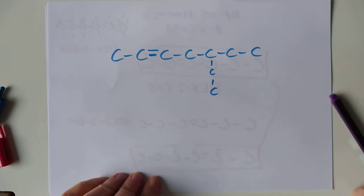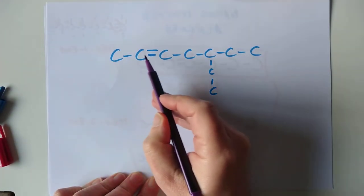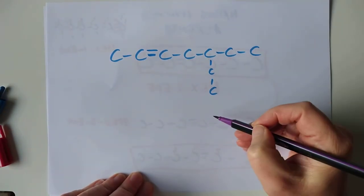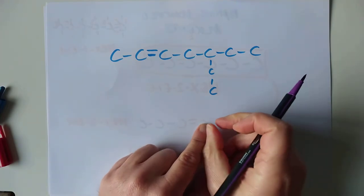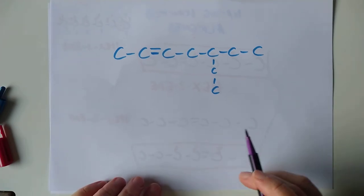So, longest continuous chain of carbons. 1, 2, 3, 4, 5, 6, 7. 1, 2, 3, 4, 5, 6, 7. It's okay. Both are the same. Not a problem. If we'd had a third carbon on here, remember, we need to grab hold of this and this and straighten it out. And this would become the main chain. But it's not a problem at the moment.